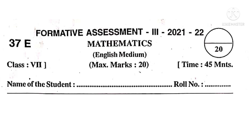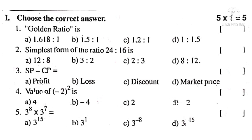Now let us take Roman number 1: Choose the correct answer. Each carries one mark. There are 5 questions, so 5 into 1 mark is 5 marks. Number 1: Golden ratio is 1.618 is to 1. So the correct choice is A.